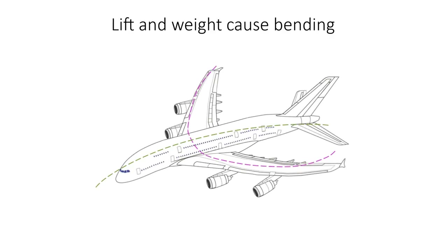Now we've seen some simple structures and loading. Can we now apply this knowledge to actual airframes? The lift generated by the wings will cause the wings to bend upwards, similarly to the case of the clamped beam we've just seen, while the weight of the fuselage will cause the fuselage to bend downwards. These lift and the weight forces are considered as distributed forces.